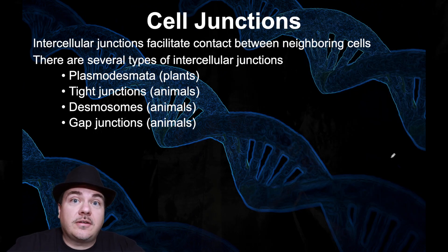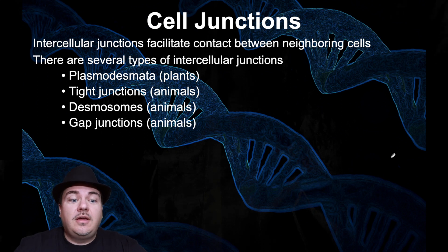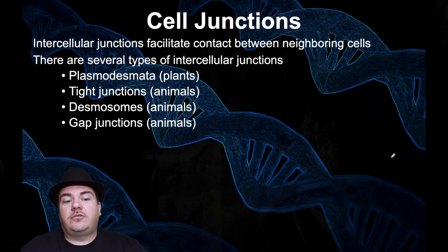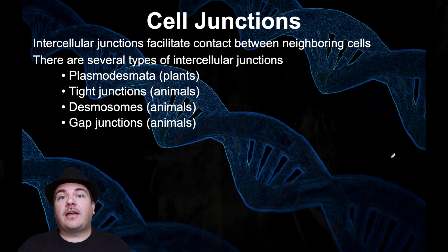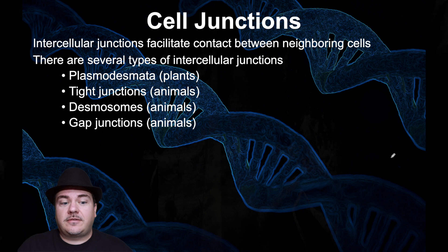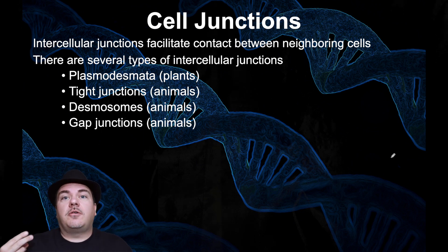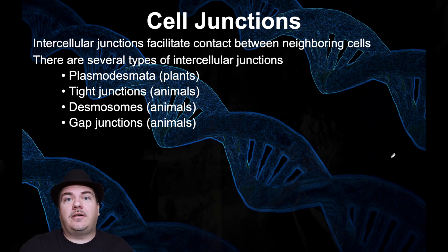There are also things that join cells to each other — those are called intercellular junctions. There are different types. The types we're going to talk about are plasmodesmata, which is for plants, and tight junctions, desmosomes, and gap junctions, which are for animal cells.